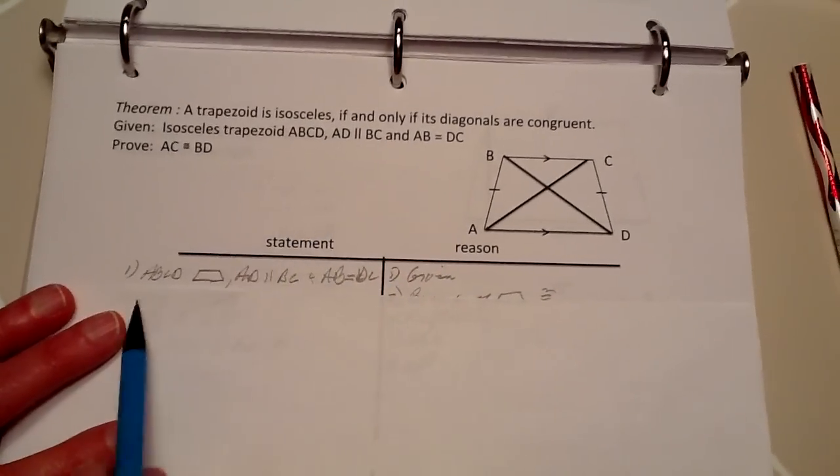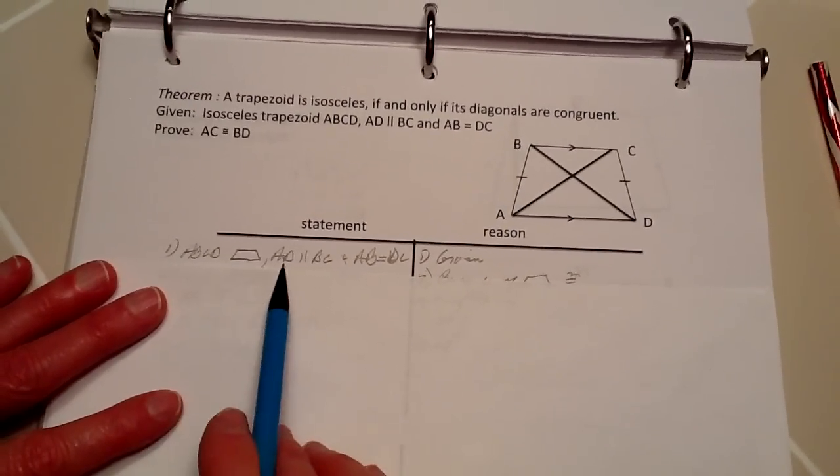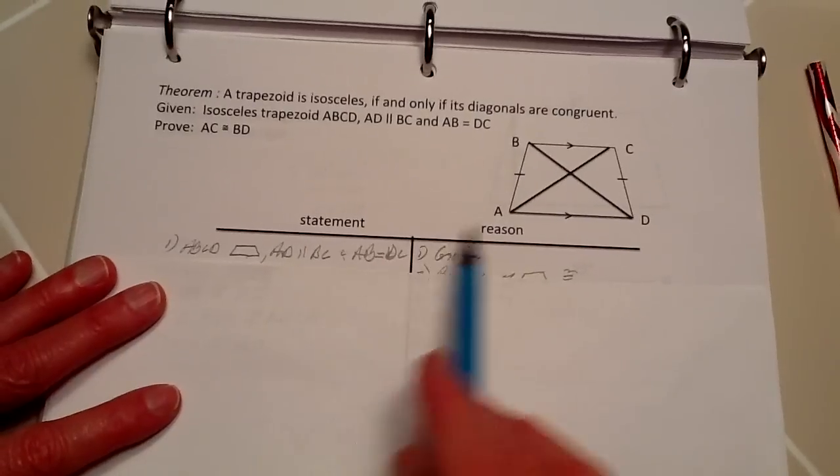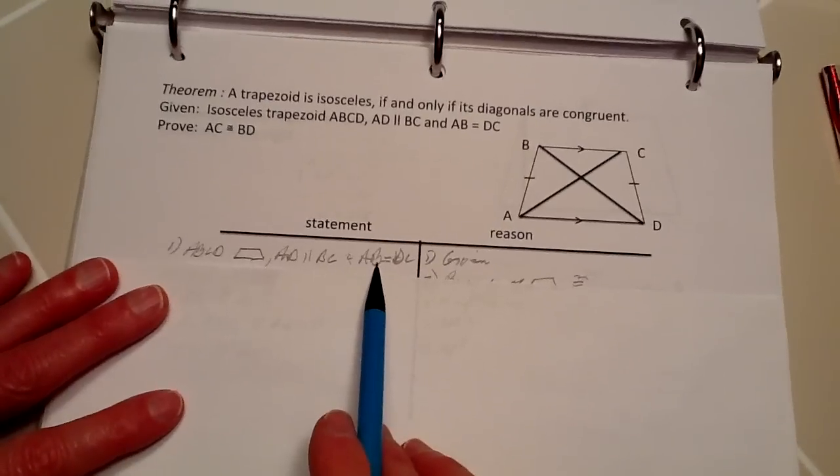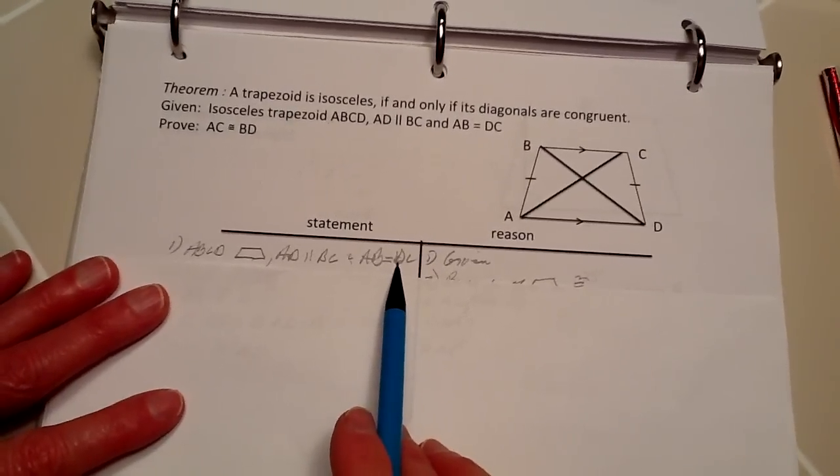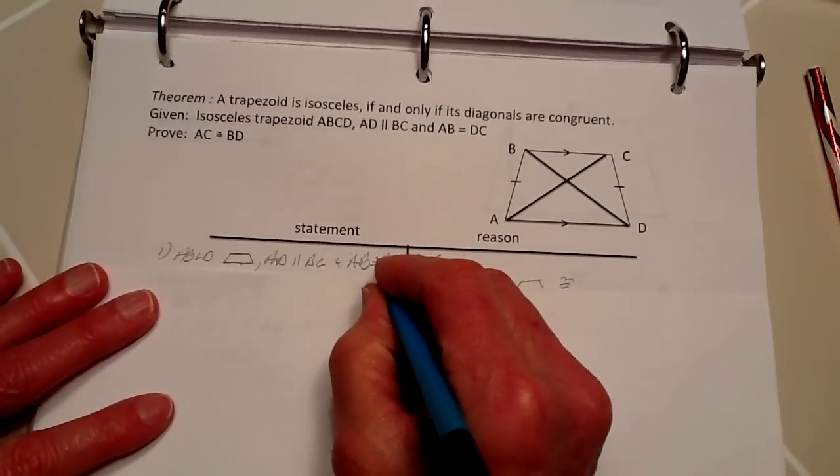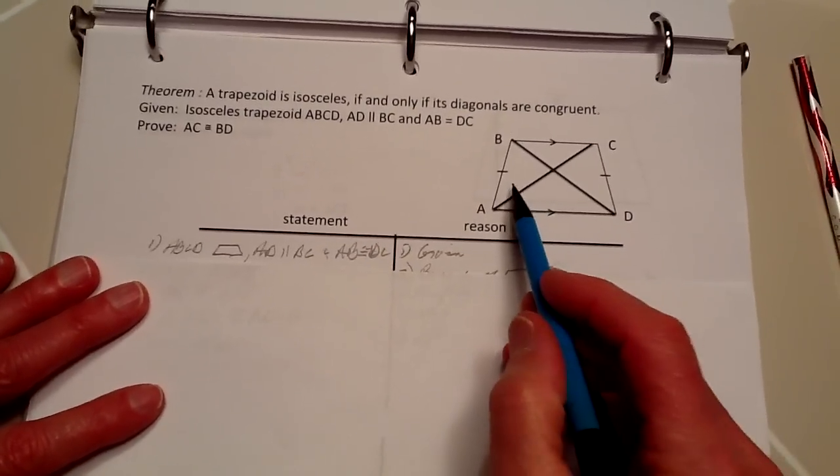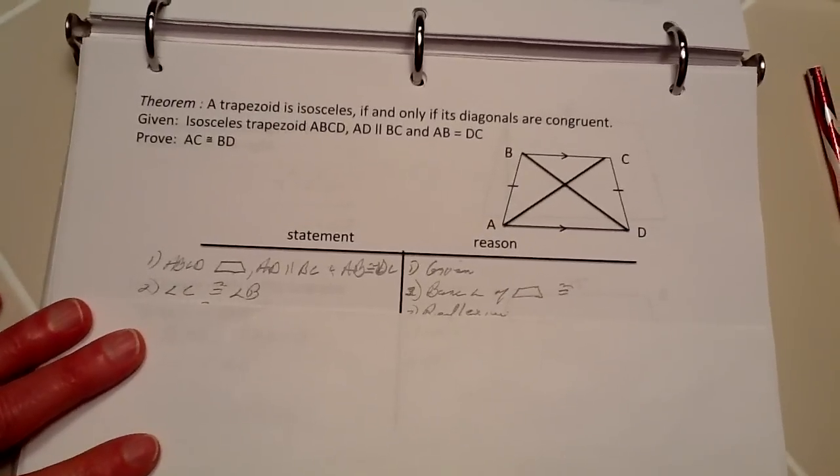We have AD parallel to BC, and AB congruent to DC because that was given. We know this as indicated right here, because that's an isosceles trapezoid.